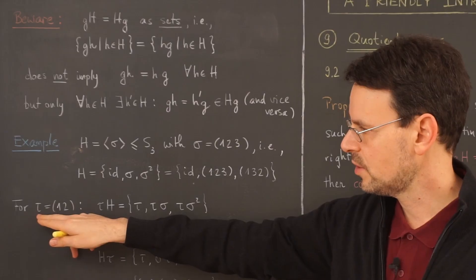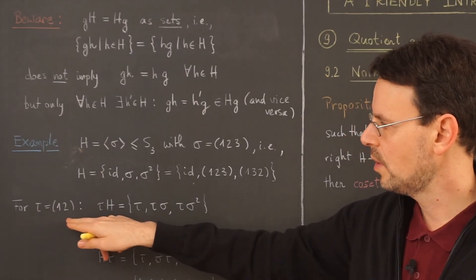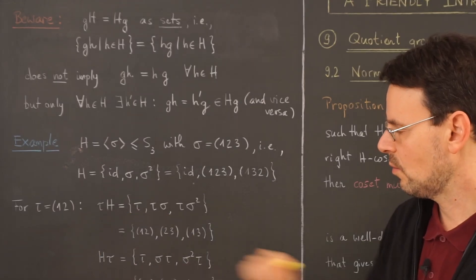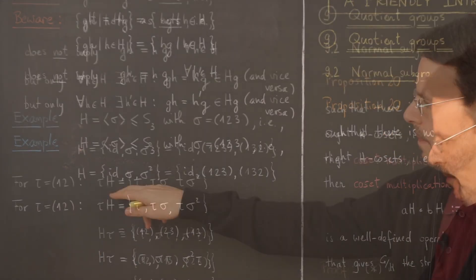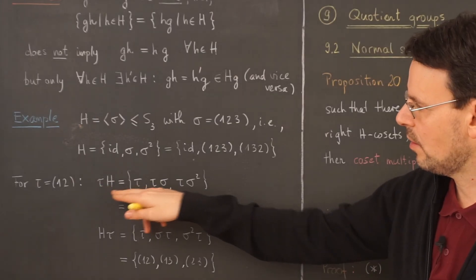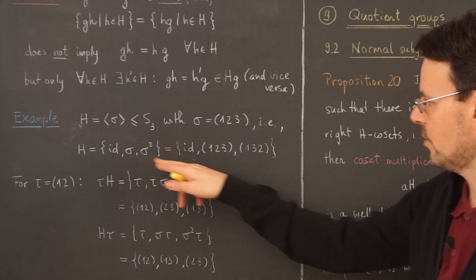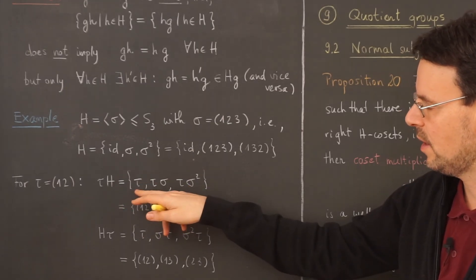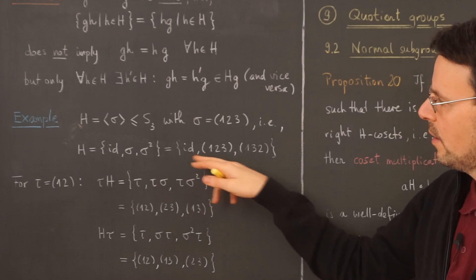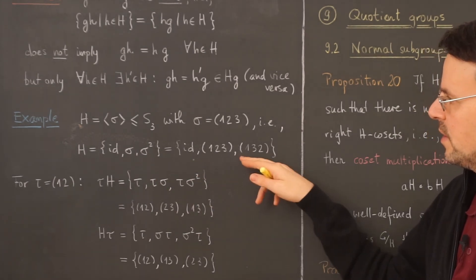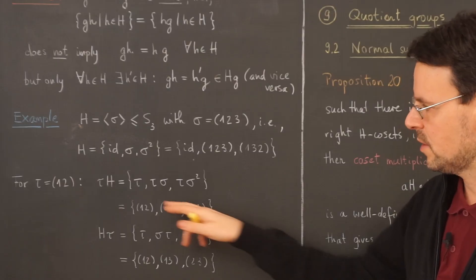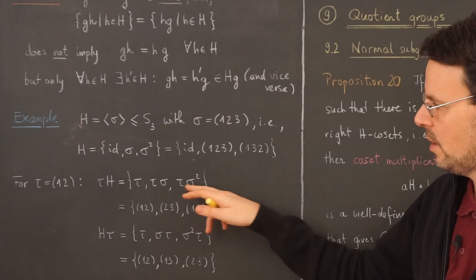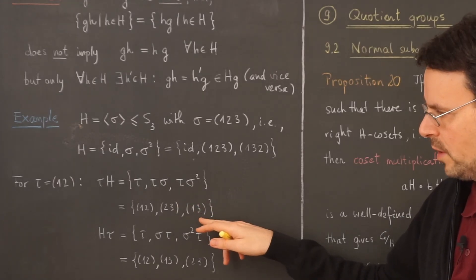Now we take the transposition tau = (1 2) and calculate the left H-coset of tau and the right H-coset of tau. Multiplying all three elements of H with tau from the left: the identity gives tau itself, then tau·sigma, then tau·sigma². This set turns out to be tau itself, then the transposition (2,3), then the transposition (1,3).